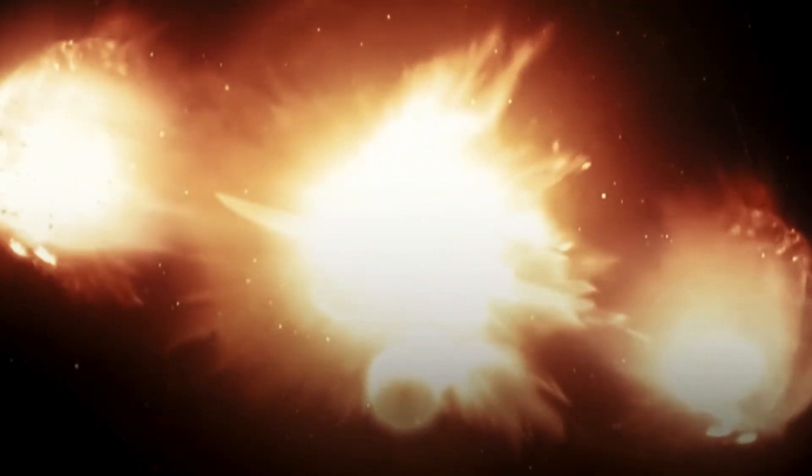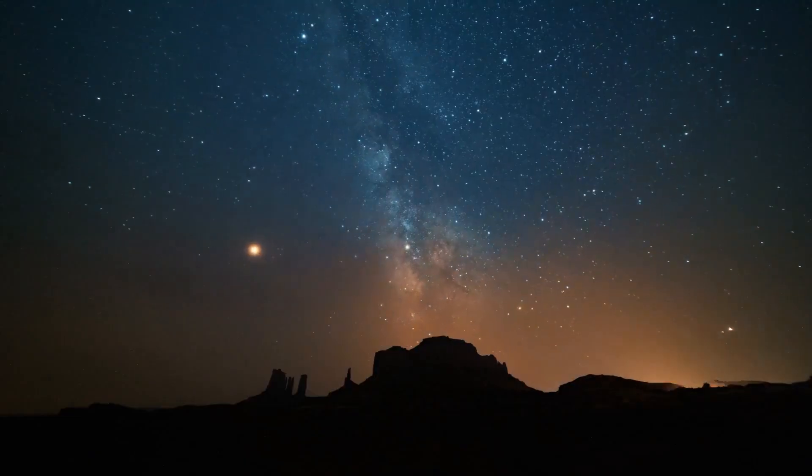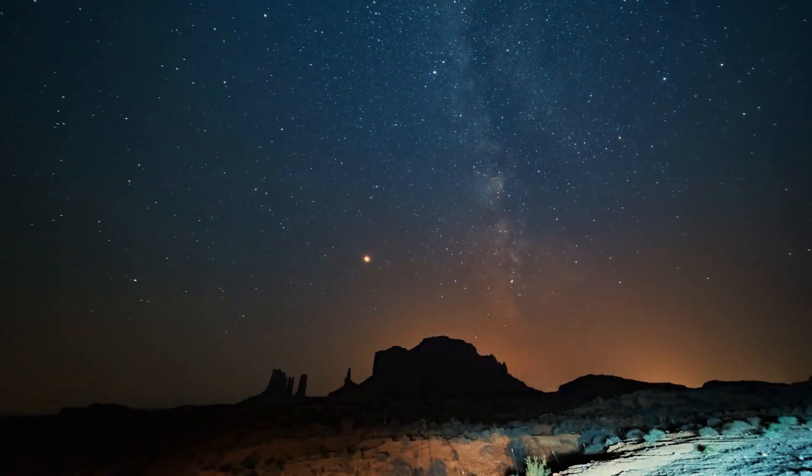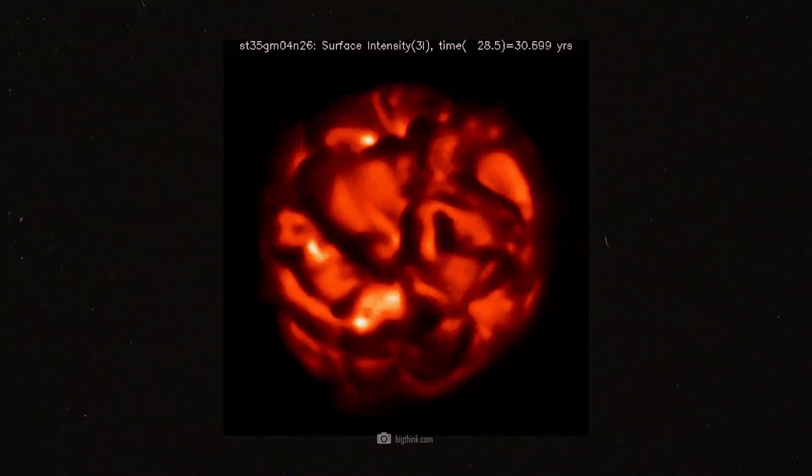When Betelgeuse had also used up the helium in its core, it began to fuse heavier elements, carbon, neon, oxygen, and finally silicon, which fused to form iron.